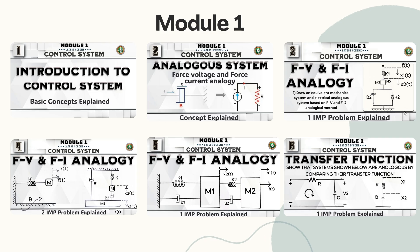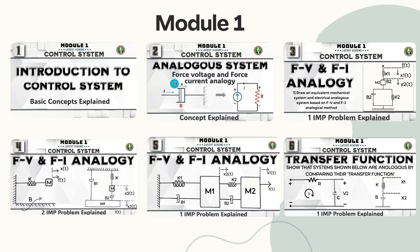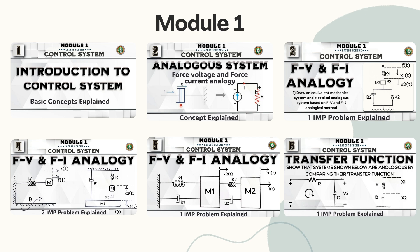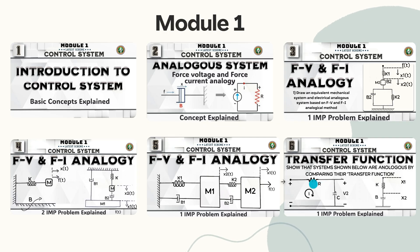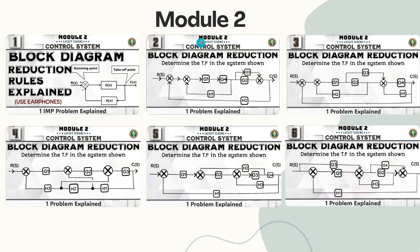From each module, these are the concepts we have discussed — these are basically thumbnails of our videos. Module 1 is an introduction to control systems, covering analogous systems: force-voltage and force-current analogy. We discuss how those two analogies work in mechanical and translational systems, comparing FV and FI analogy, with problems solved in separate videos.